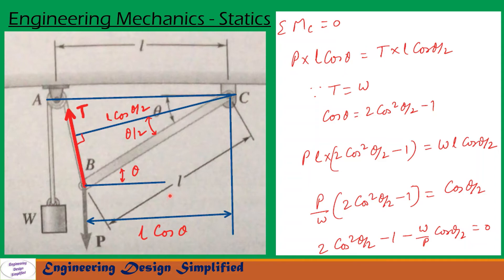P is creating a counterclockwise moment about C and T will be creating a clockwise moment about C. The moment due to T about C is T multiplied by the perpendicular distance from C to the line of T. Since this angle is theta, this angle will be theta by 2, and the perpendicular distance is L cos(theta/2). So moment due to T about C equals T into L cos(theta/2).